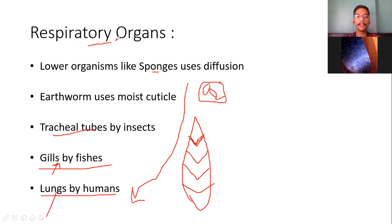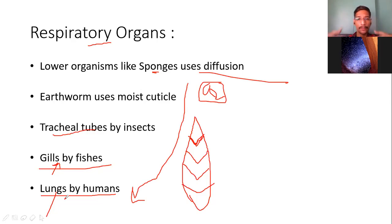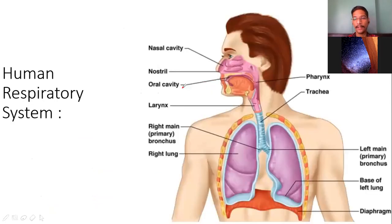In lower organisms, respiration is done only by diffusion. But in humans we have a whole respiratory system that we will talk about in this lecture. I think almost all students are familiar with this diagram — this is basically a diagram of the human respiratory system.